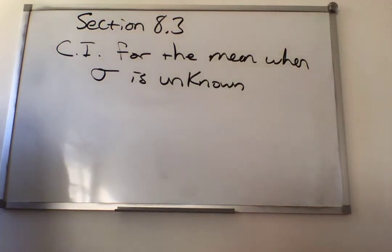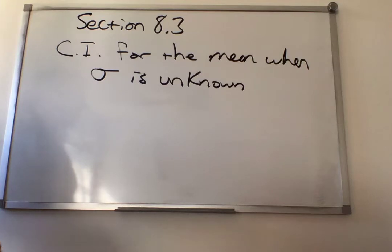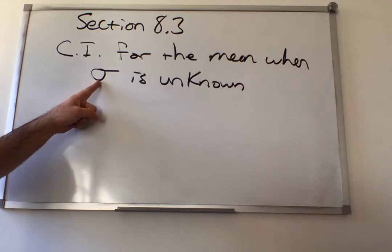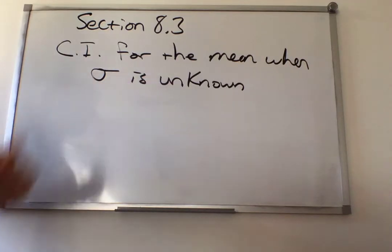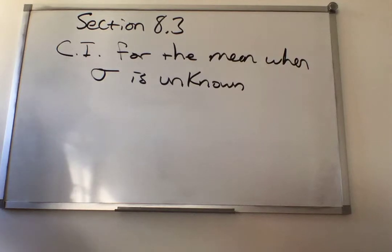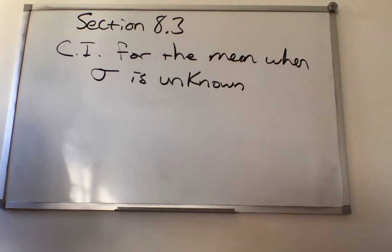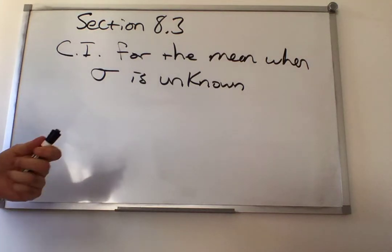Now we're moving on to section 8.3. As we go through the work, you're going to see that it's very, very similar to how we computed confidence intervals in section 8.2. The difference here is that the population standard deviation is unknown — we do not know what it is. In 8.2, they always told us what the population standard deviation was. That's the key difference between problems from 8.2 and problems from 8.3.